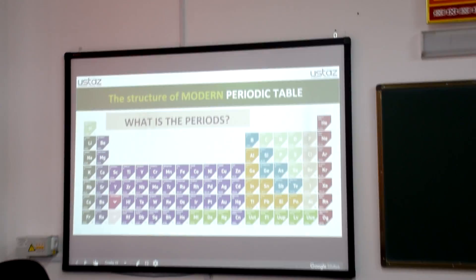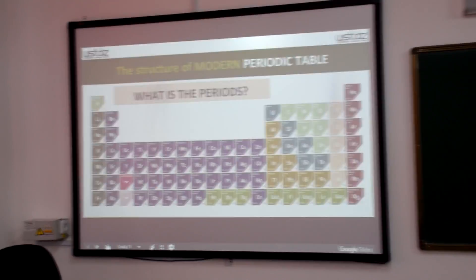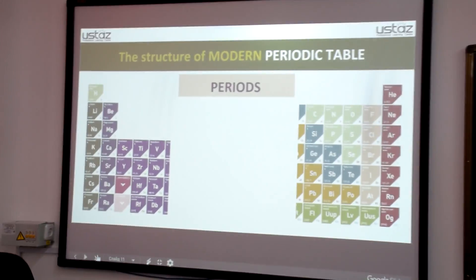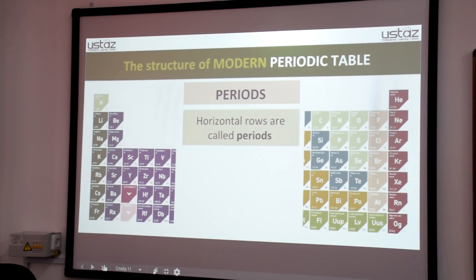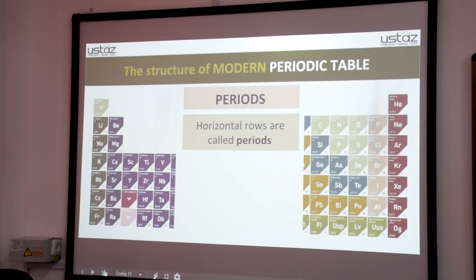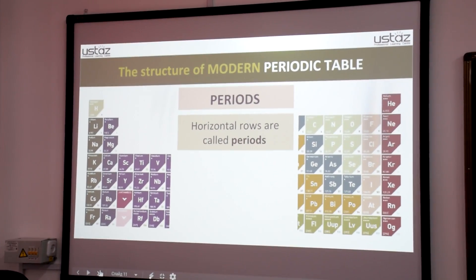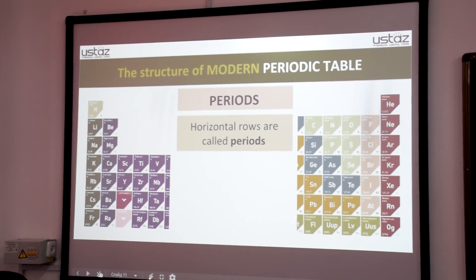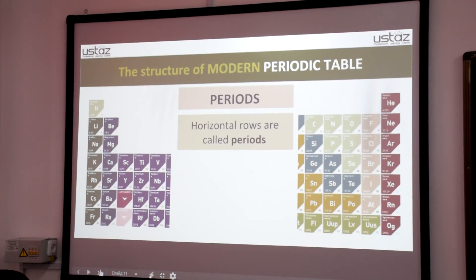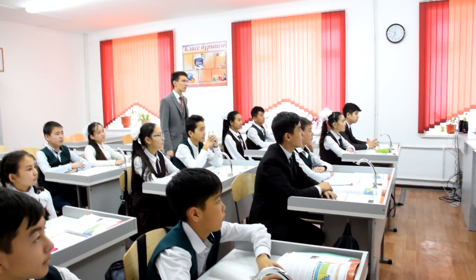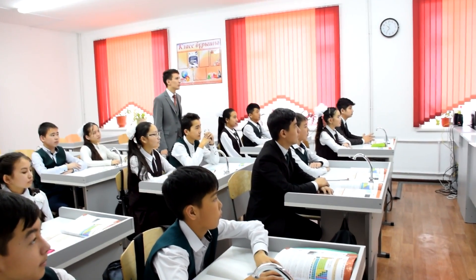What is a period? Periods — horizontal rows are called periods. Structure of the modern periodic table.